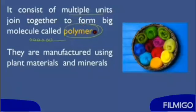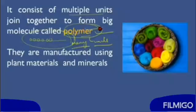Polymer is composed of 'poly,' meaning many, and 'mer,' meaning units. The basic unit of a polymer is a monomer, a single unit. When these monomers are joined multiple times, they form a big molecule known as a polymer.